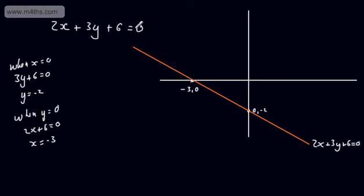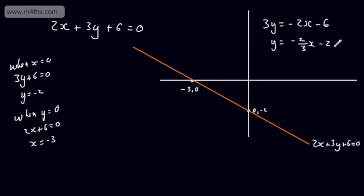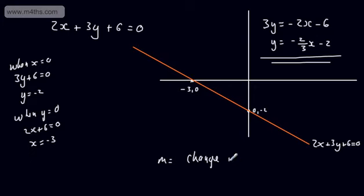We can also rearrange 2x + 3y + 6 = 0 into y = mx + c form to find the gradient easily. Subtracting 2x and 6 from both sides gives 3y = -2x - 6, and dividing by 3 gives y = -2/3 x - 2. So the gradient is -2/3 and the y-intercept is -2. The gradient m is simply the change in y over the change in x — rise over run, or dy/dx.